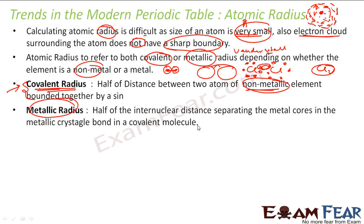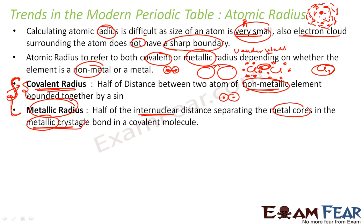For metallic elements, they do not share electrons. So for those elements, they form crystals and we can find the inter-nuclear distance between two metallic cores in the metallic crystals, then divide by two. So for non-metals we use covalent radius, and for metals we use metallic radius.